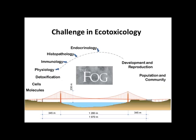We can measure responses at different levels: molecules, cells, detoxification enzymes, physiology, and so on. Using the example of the Golden Gate Bridge with fog placed right in the middle, that is exactly the state we're in — there is a lot of fog between our understanding of the links. Just because we see a response of a particular protein doesn't mean it will translate to developmental reproduction. However, the field of endocrinology is probably one of the most advanced in being able to link this.